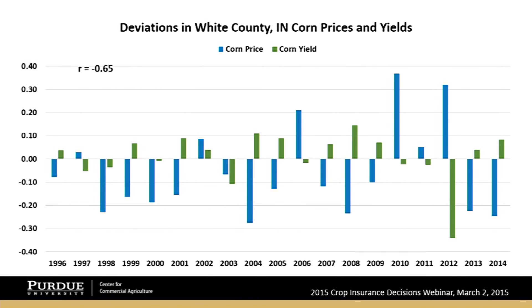In the Eastern Corn Belt, because of this natural hedge, we tend toward very high coverage levels. In the Western Corn Belt, conversely, lower coverage levels are common because the natural hedge doesn't apply as effectively. Looking at White County deviations in corn prices and yields, as yields go down, prices tend to go up. In 2012, yields dropped about 30% below trend while prices rose over 30% — a pretty strong negative correlation.